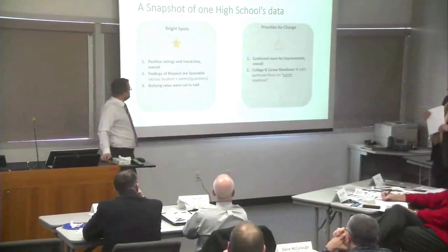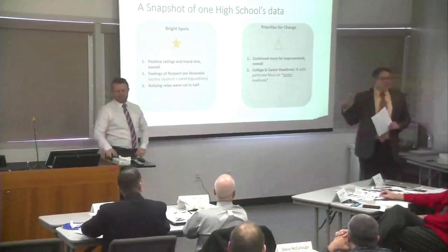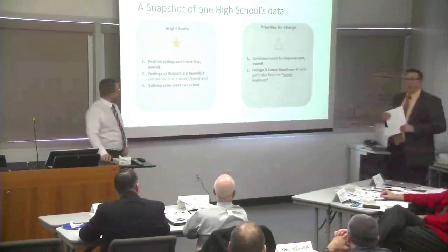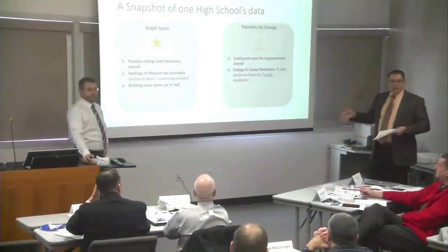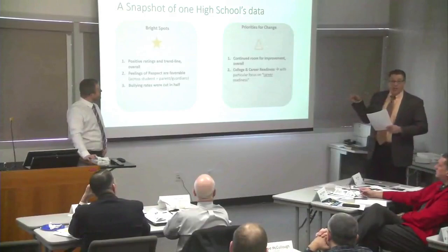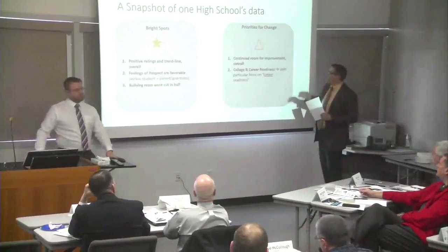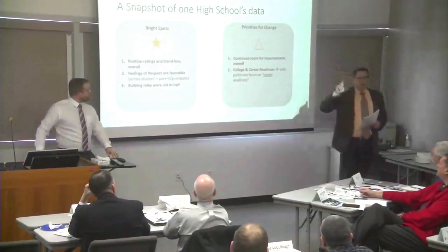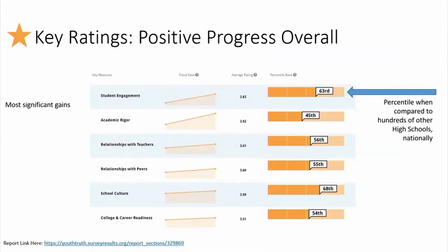I'm going to go over a little bit of data from one of our schools — the one where our data looks pretty good. I purposely put up the ones where data looks pretty good, but I did highlight some schools where we have some bigger challenges. It's our alternative program, a real small school — High Tech High. Got some positive trend lines overall. We've done it longitudinally now and have two years of data. There's a real feeling of respect in that school, and over a one-year period they cut their bullying rates down in half. For college and career readiness, there's room for improvement — we're not as high as we need to be.